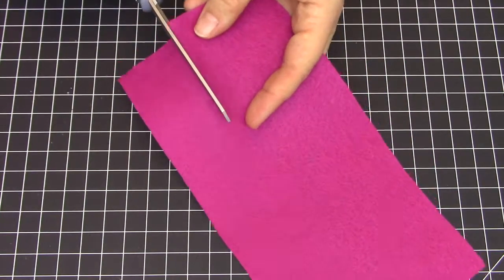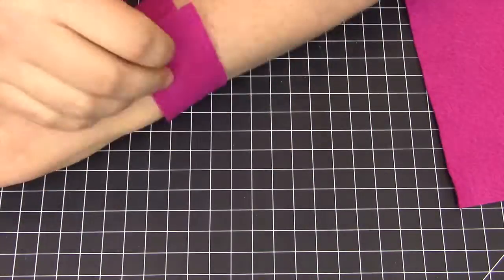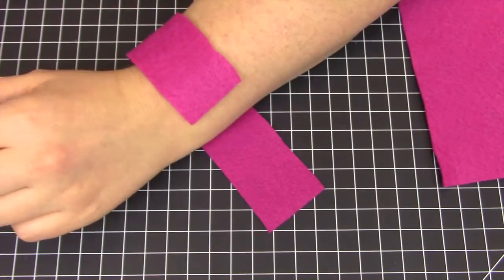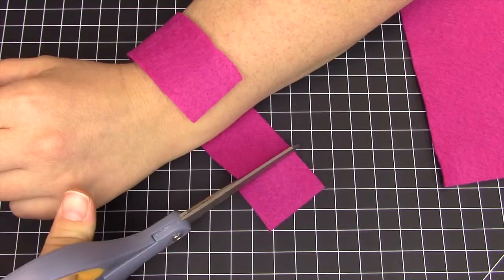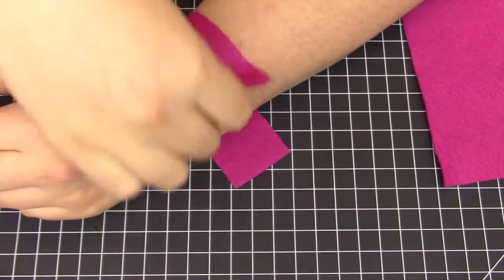First, cut a one and a half inch wide strip of felt to be the bracelet, and check to see how it fits. We don't want it to overlap, so trim it so that the ends just meet.